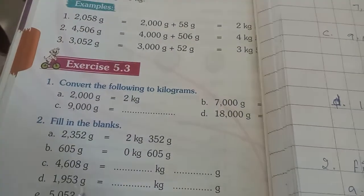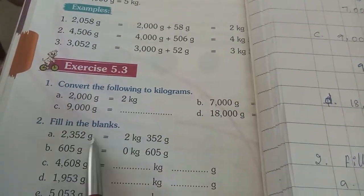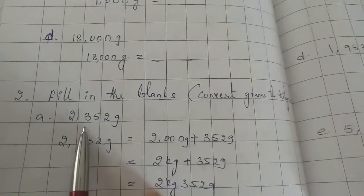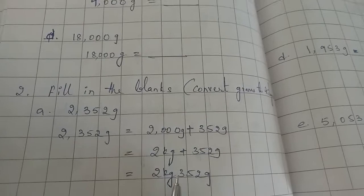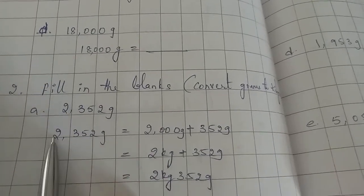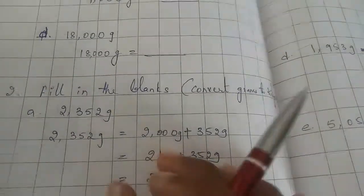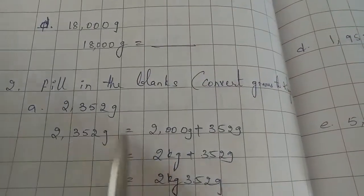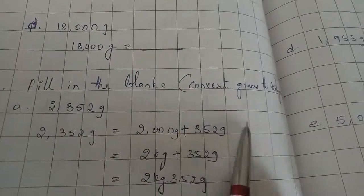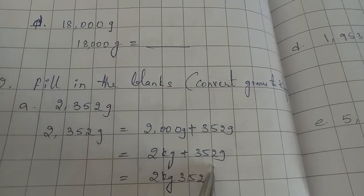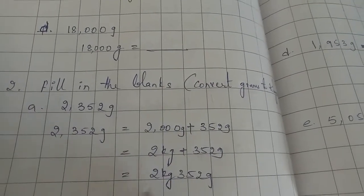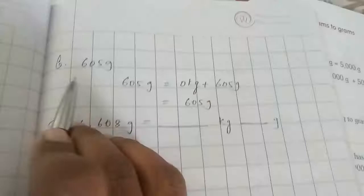Fill in the blanks — convert the grams to kilograms. First one: 2352 grams. How can we convert this to kg? First we need to expand: 2000 grams plus 352 grams. 2000 grams means 2 kg, so the answer is 2 kg 352 grams.